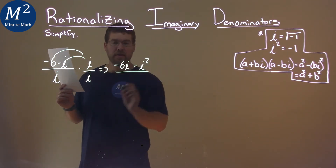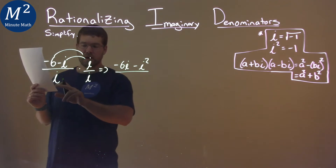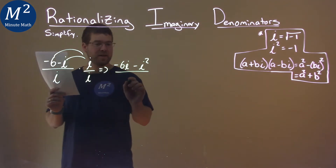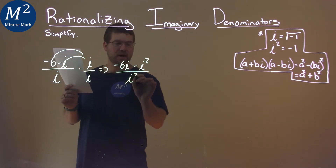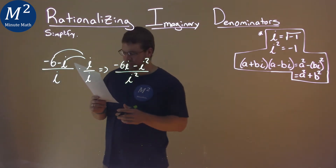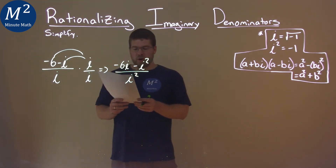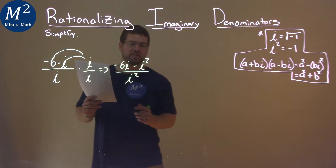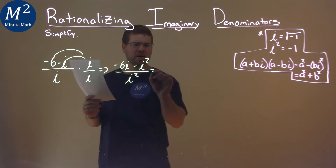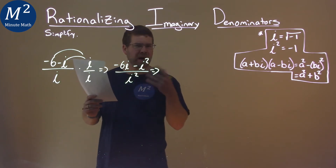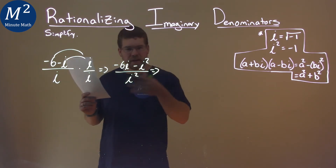The denominator, i times i, is just i squared. What do we know about i squared? Well, i squared is negative 1.